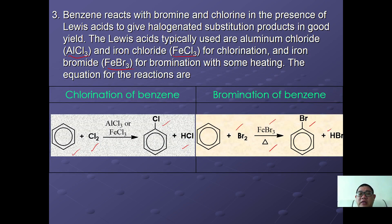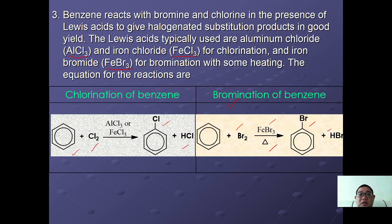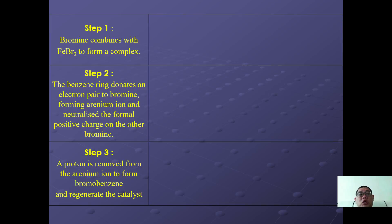For bromination, benzene reacts with bromine catalyzed by FeBr3 under reflux to form bromobenzene and HBr as a side product. We are going to use bromination as our main reaction to explain the mechanism for halogenation, which takes place in three steps.